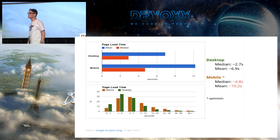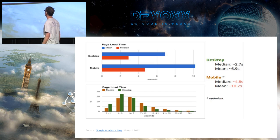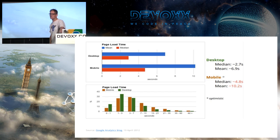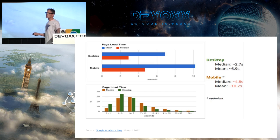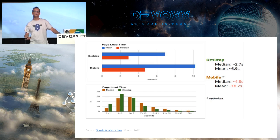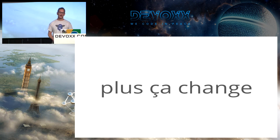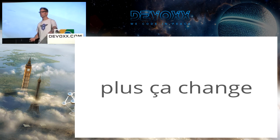Some charts from Ilya Grigorik's talk show that the problem is that mobile is slow — mobile performance is a real problem. If you look at Ilya's talk from yesterday, the other thing he points out is that there's real damage to business. He's got some great figures from Bing showing how mobile web performance problems really damage their business.